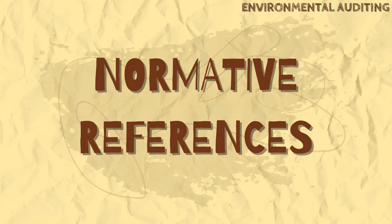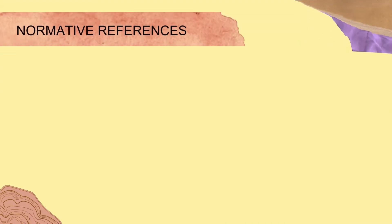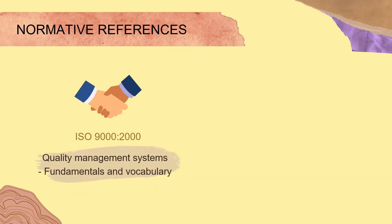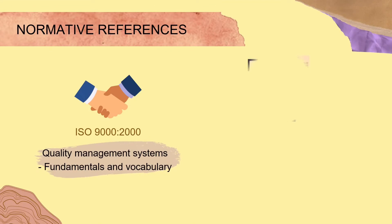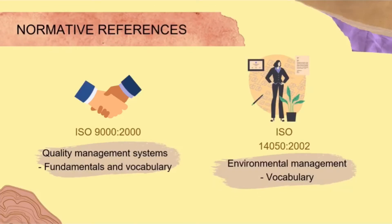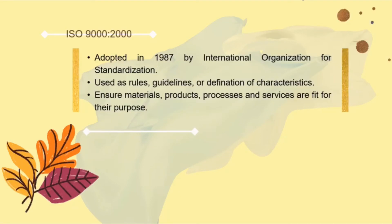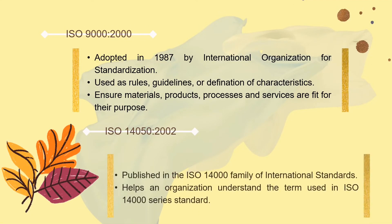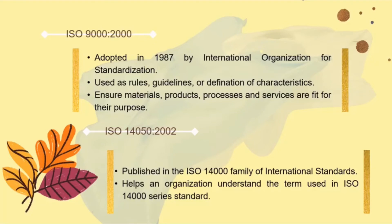Let's look into the normative references in environmental auditing. First is ISO 9000:2000, a quality management system that focuses on fundamentals and vocabulary, adopted in 1987 by the International Organization for Standardization. It is used as rules, guidelines or definitions of characteristics to ensure materials, products, processes and services are fit for their purpose. Second is ISO 14050:2002, published in the ISO 14000 family of international standards, which helps an organization understand the terms used in the ISO 14000 series standard.